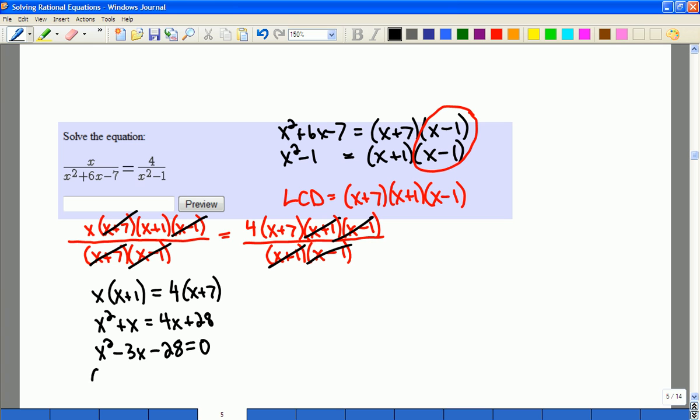And I recognize this as one I can factor, which would be x plus 7 and x minus 4. Oops, sorry, I've got that backwards. It should be minus 7 and plus 4.